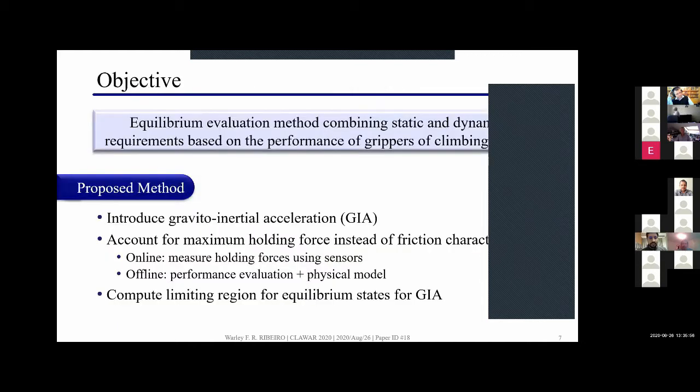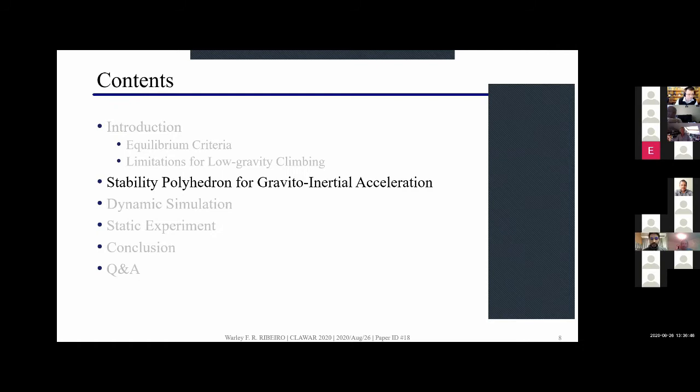Given those limitations, the objective of the work I'm presenting today is to develop an equilibrium evaluation method that combines both static and dynamic requirements based on the performance of spine type grippers of climbing robots. Here we introduce the gravito-inertial acceleration vector and by accounting for the maximum holding force instead of the friction characteristics we can compute the region that limits equilibrium states for the gravito-inertial acceleration vector. To define this maximum holding force you can have two options: either doing online by measuring it using force sensors or doing offline by doing per force evaluation of the gripper and combining that with the physical model.